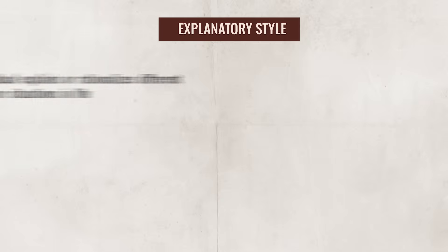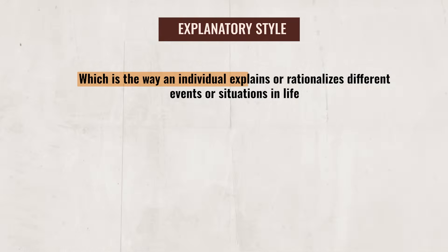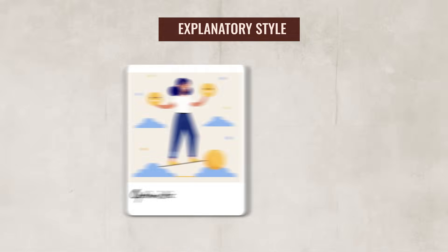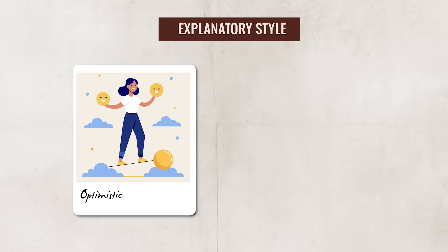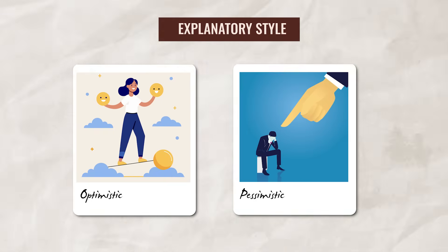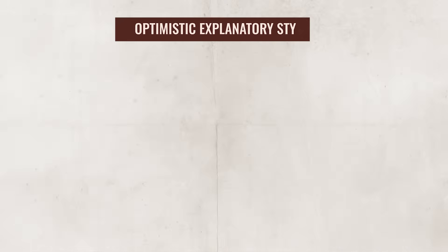Now one factor that can impact how an individual explains behaviors is a person's explanatory style, which is the way an individual explains or rationalizes different events or situations in life. People have either an optimistic explanatory style or a pessimistic explanatory style.